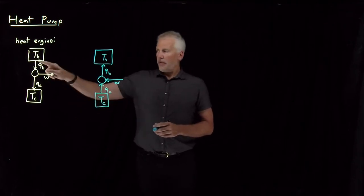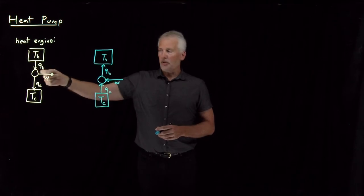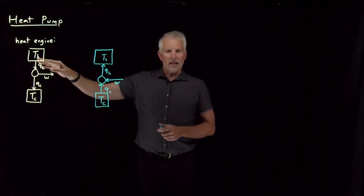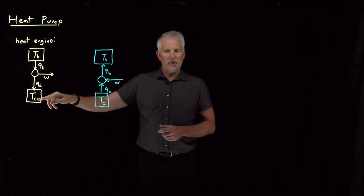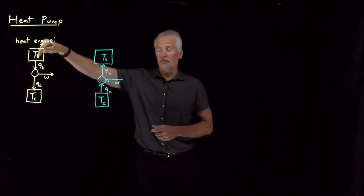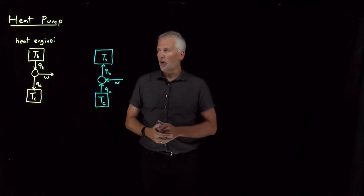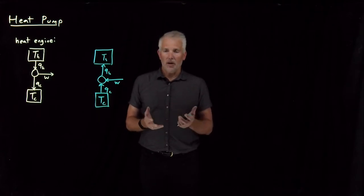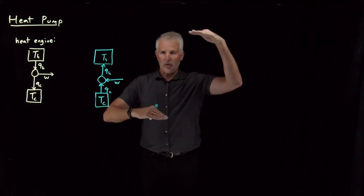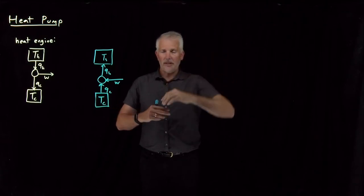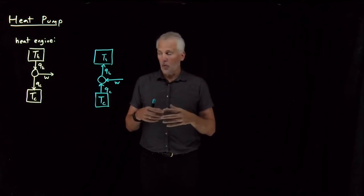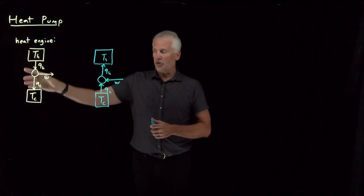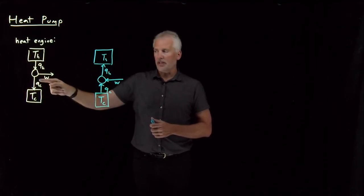Let's think about what that means. This process involves absorbing some heat at a hot temperature, using some of it to do work, and letting the rest flow down to the cold temperature. It's no accident that the hot temperature is drawn on top and cold on the bottom — it's very natural for heat to flow from hot to cold. When Carnot came up with this idea of heat engines, he was thinking of something like a waterfall, where it's natural for water to flow downhill and you can use that tendency to turn a water wheel and get some work out of the process.